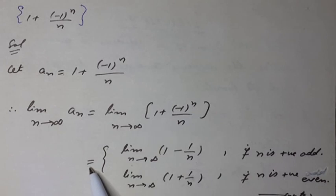It can be written as equal to limit n tends to infinity (1 minus 1 over n) if n is odd, and limit n tends to infinity (1 plus 1 over n) if n is even. Note it.